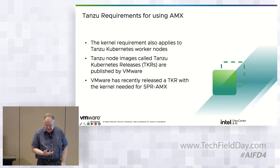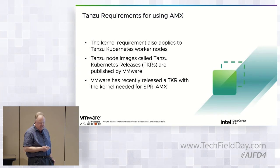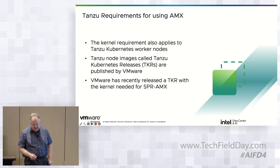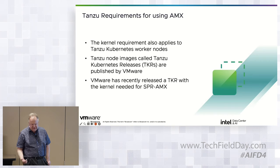The kernel requirement also applies to all Tanzu worker nodes — they also have to be running kernel 5.16 or later. Tanzu comes with a set of pre-built, automatically updated node images called Tanzu Kubernetes Releases, or TKRs. Each TKR image is basically an OVA that deploys a Kubernetes control node or worker node — it's a Linux VM with a specific version of Kubernetes and a specific Linux kernel installed.